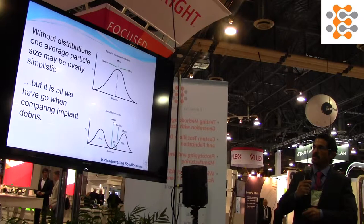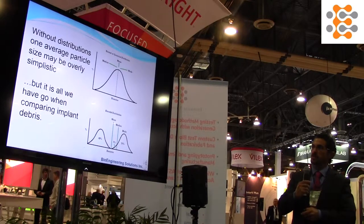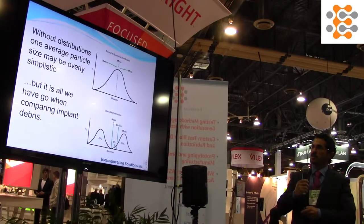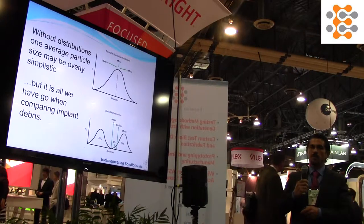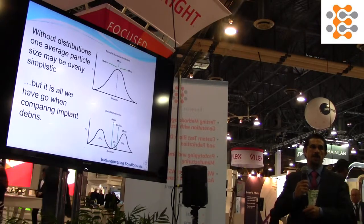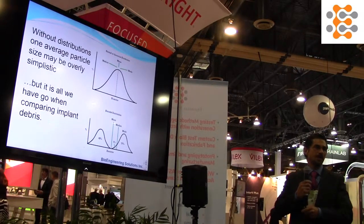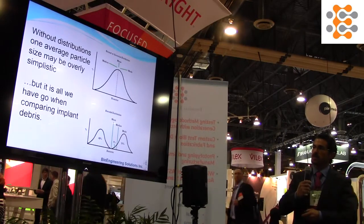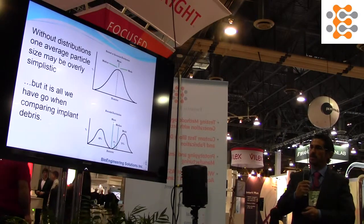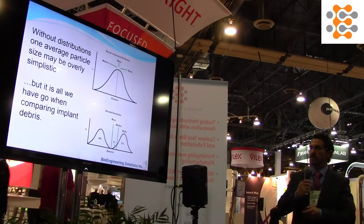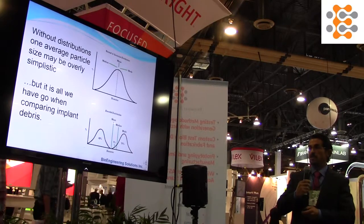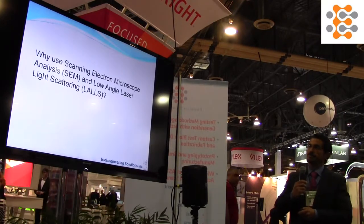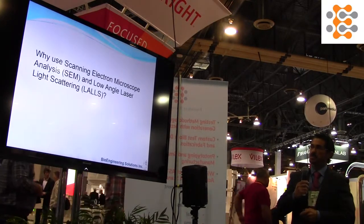There are also two distributions of particles shown here. One is quite different than the other, and when they went into somebody they would also have quite different biologic reactivities. But those are the kinds of complexity that we don't really report, because it's not really known how that would turn out or what to do with that. The best we can do is report a mean size at this point.